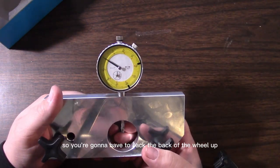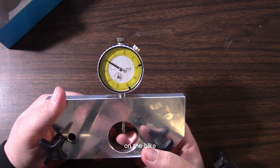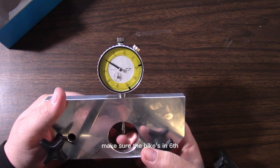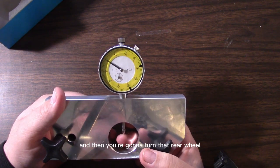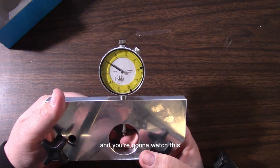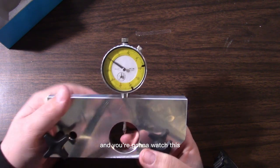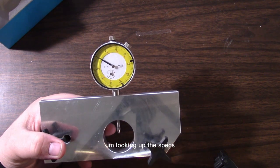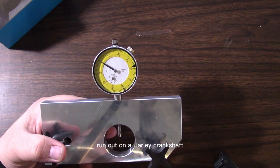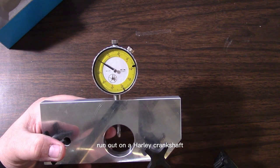You can rotate your scale, so you're going to set it to zero like this. You're going to lock your bezel in real tight, and then you're going to put the bike in gear. You're going to have to jack the back of the wheel up on the bike, make sure the bike's in sixth gear with both your spark plugs out.